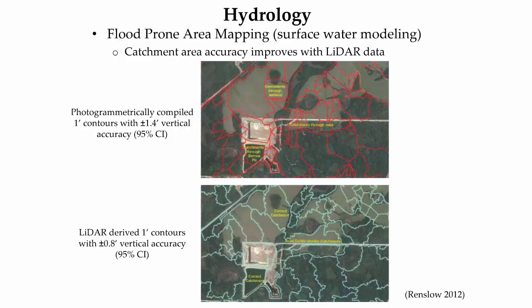Flood and runoff modeling is another application of LiDAR data in the hydrology domain. The Southwest Florida Water Management District conducted a study analyzing the use of LiDAR data in its flood-prone area mapping. The top image shows hydrological catchment areas derived from photogrammetrically compiled 1-foot contours interpolated into a 5-foot grid cell digital elevation model, or DEM. The bottom image is a 5-foot grid cell DEM interpolated from LiDAR postings. The photogrammetrically compiled DEM had errors with lines crossing catchment areas such as the borrow pit shown in the yellow box. The higher accuracy LiDAR-derived DEM reduced these errors, producing a more accurate floodplain determination.